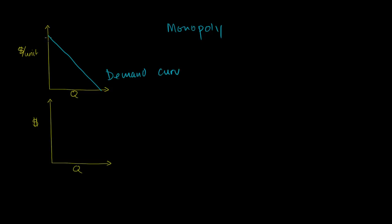This axis right over here is dollars per unit. On the demand curve, you could view that as price. And this horizontal axis is quantity. Over here, I'm still going to have quantity on the horizontal axis, but on the vertical axis I'm going to have dollars — not dollars per unit — so I can use this to measure total revenue.